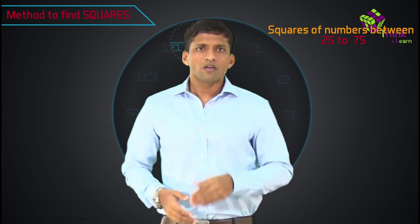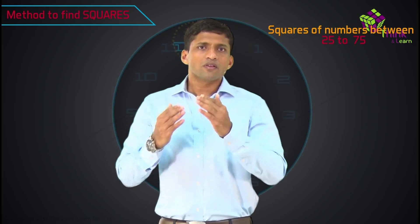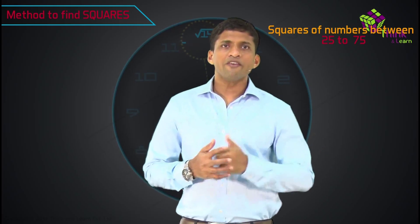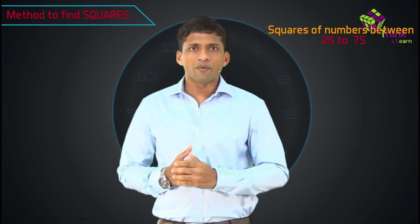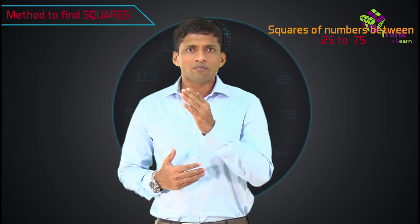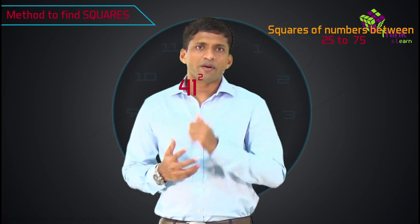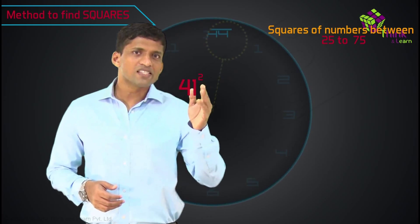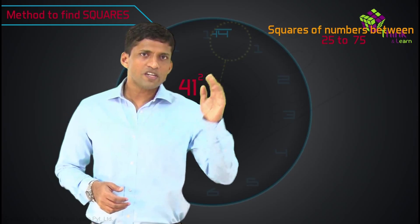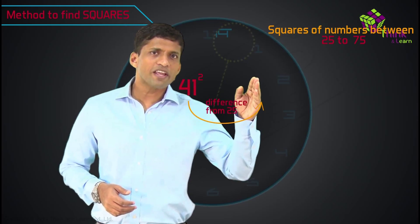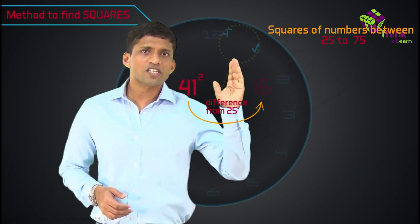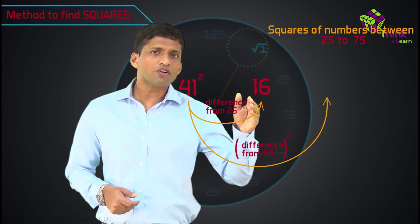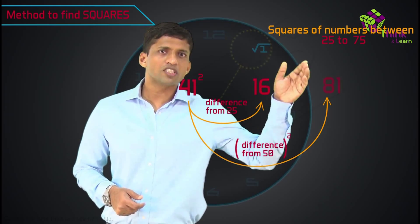The method is very simple. To find squares of numbers between 25 and 75, let's take an example. If you want to find 41 square, there are two very simple steps. First step: take the difference from 25 and write as the first two digits — that's 16. Then take the difference from 50, which is 9, and the square of that you write as the last two digits, which is 81.